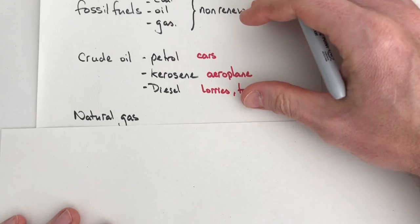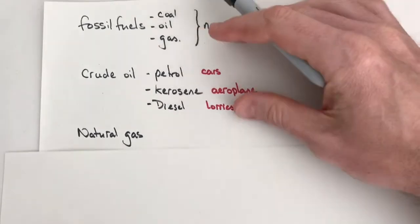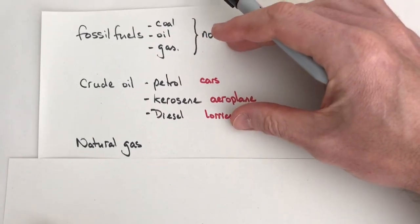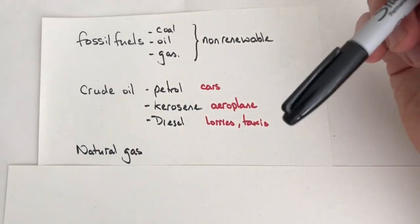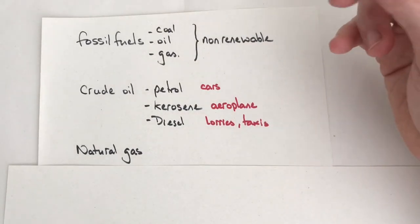Okay, another type of fossil fuel we had here was gas. Natural gas is also non-renewable, so therefore again when that supply runs out, we won't have access to it.